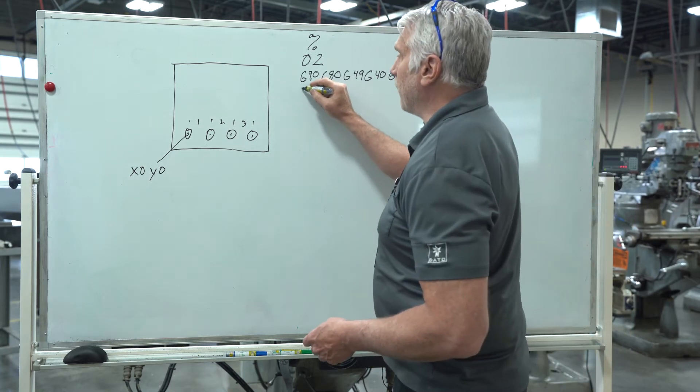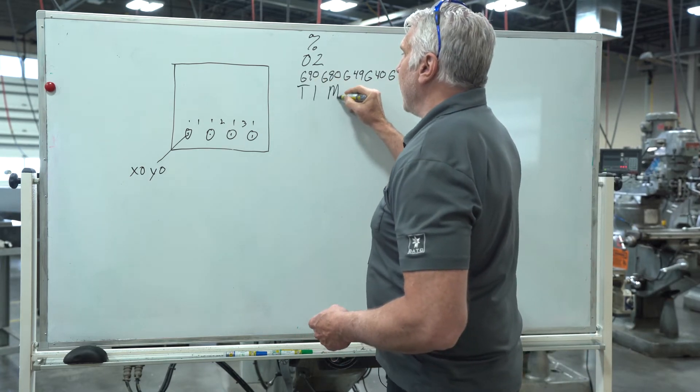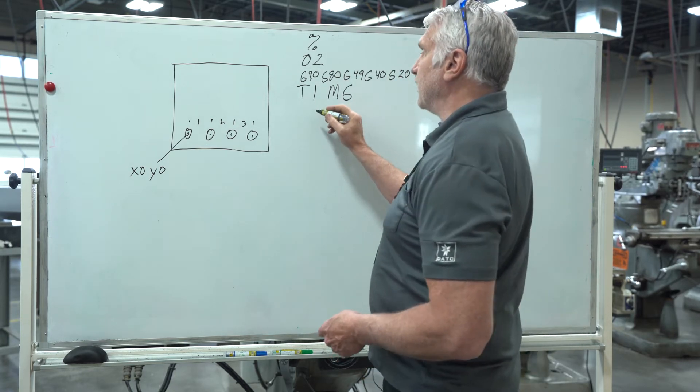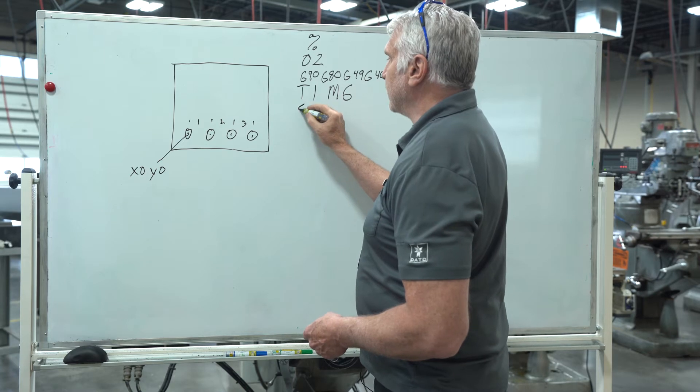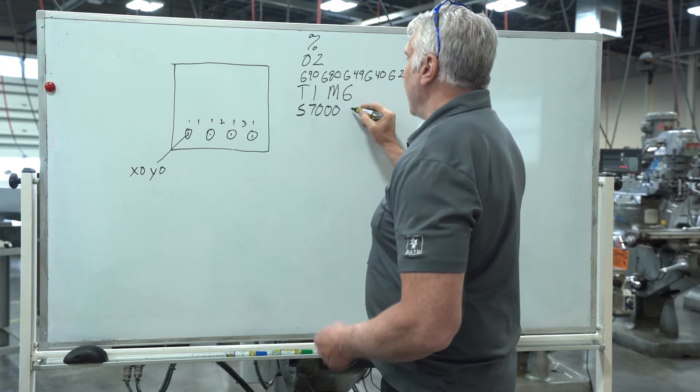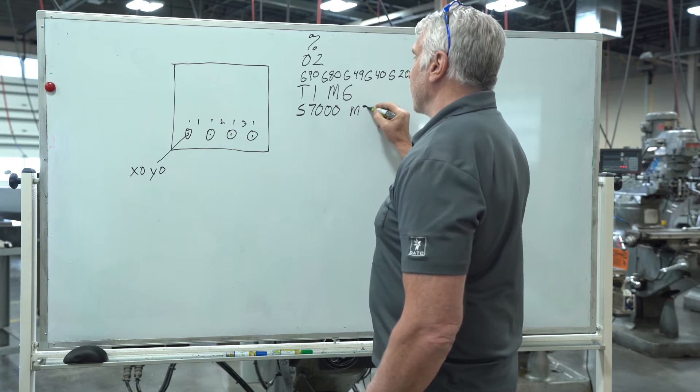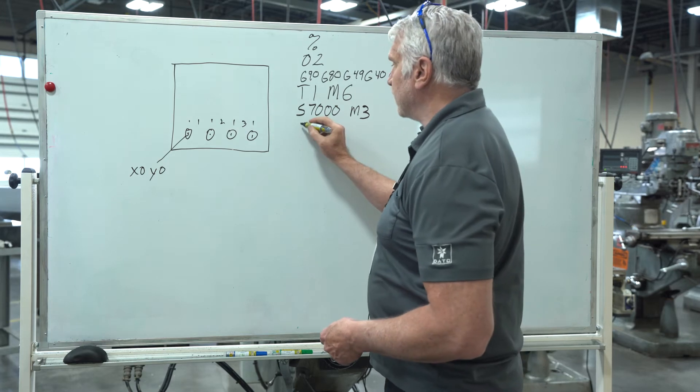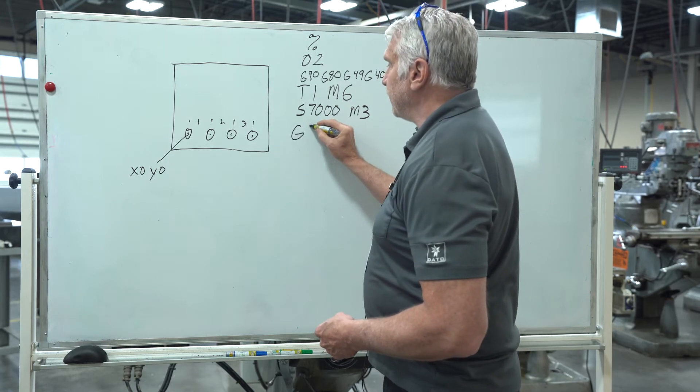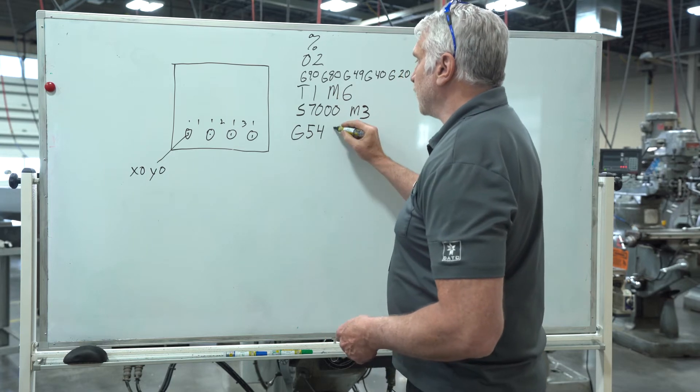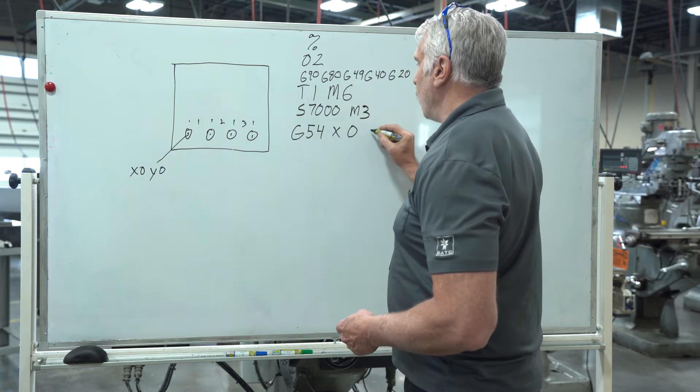Next thing we want to call up our tool. This is going to be tool number one and we're doing M6. Next thing we want to do is turn on our spindle. Let's say we're going to go S7000 RPM and we're going to turn it on clockwise so there's M3. Next thing we're going to do is call up our work coordinates and we're going to use G54 for our work coordinate and we're going to go to X0 Y0.